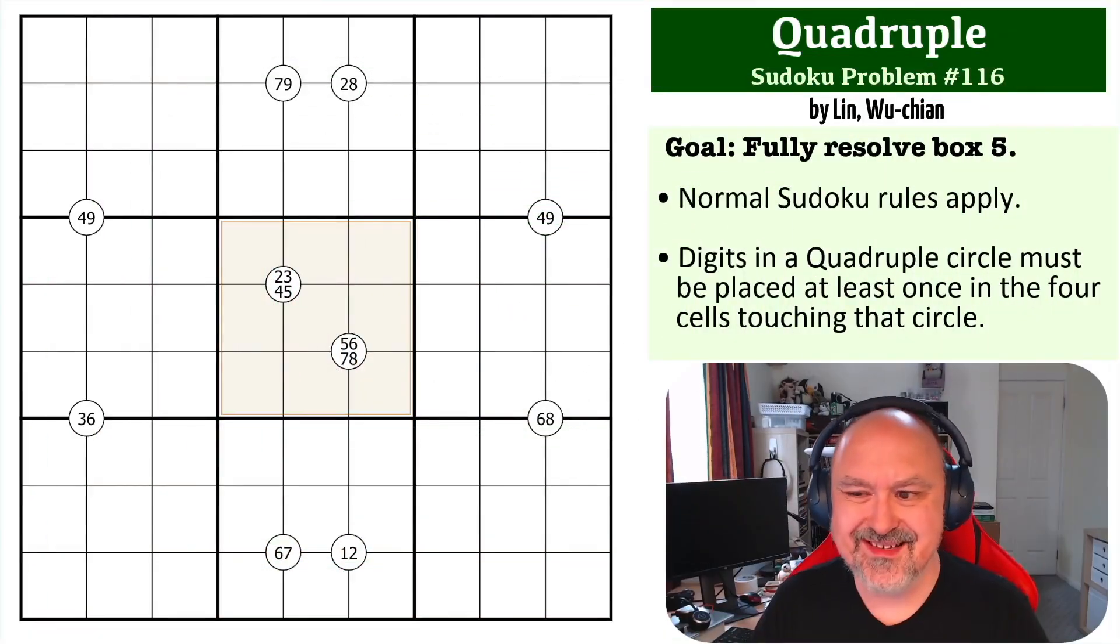Hey everyone, this is Bremster and this is number 116 in the Sudoku problem series. This is a Quadruple problem by Wu Chenglin, and thank you very much for sending it in. The goal on this one is to fully resolve box five using only the Quadruple clues.